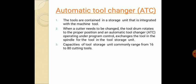Next, the automatic tool changer. In CNC machine we see lot of operations that need to be carried out. The tools are contained in a storage unit that is integrated with a machine tool. When a cutter needs to be changed, the tool drum rotates to the proper position. An automatic tool changer operates under program control, exchanges the tools in the spindle for the tool in the tool storage unit. It performs the required operation as per the program given. The capacity of the tool storage unit commonly ranges from 16 to 80 cutting tools.